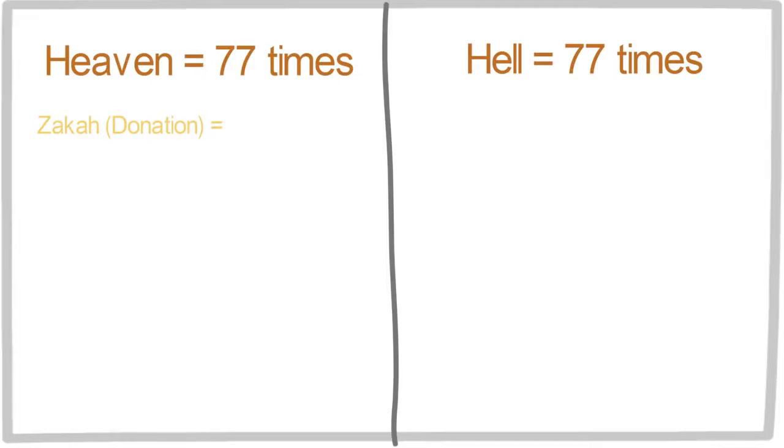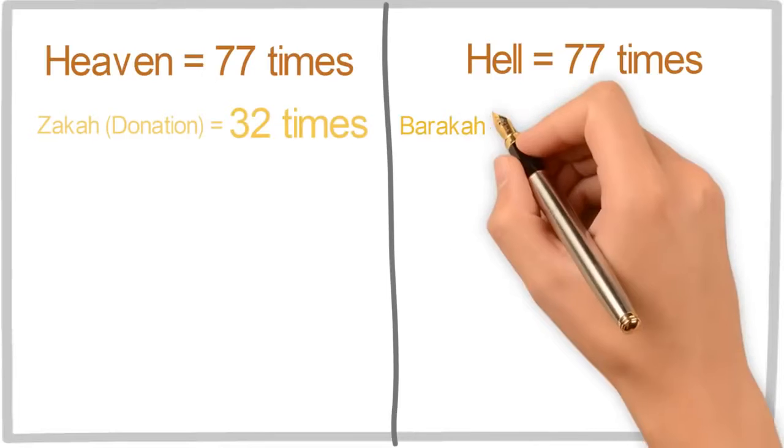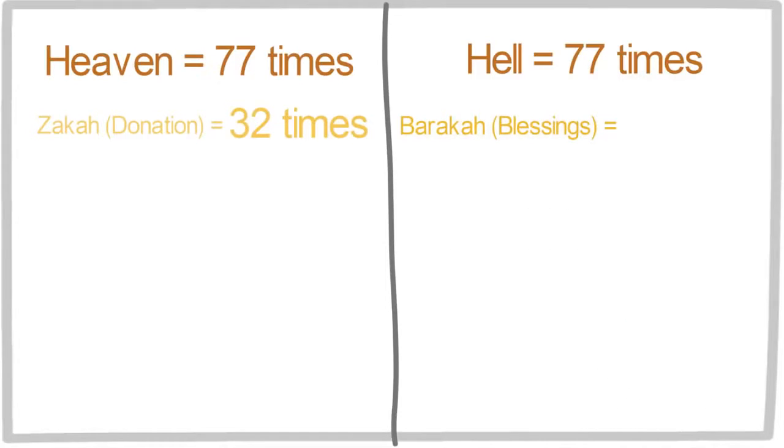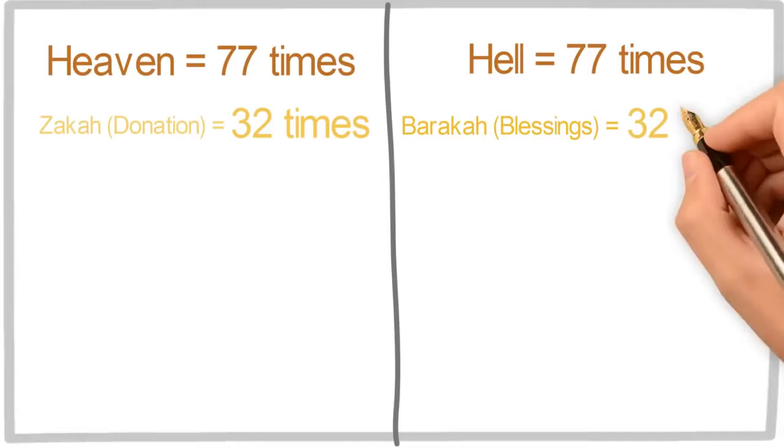Zakat, zakat is an Arabic word whose translation is donation, the financial donation that Muslims are supposed to give to the poor, and it is repeated 32 times. And the barakah, the blessing that comes out of giving a donation to the poor, it is repeated 32 times.